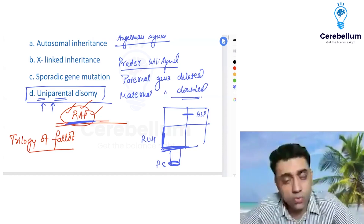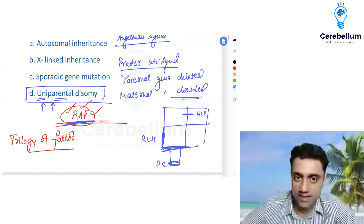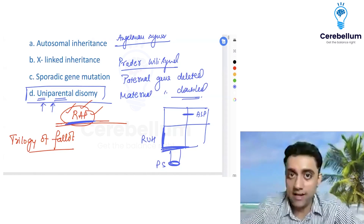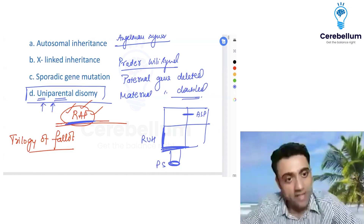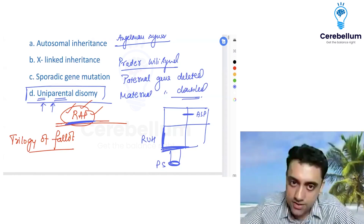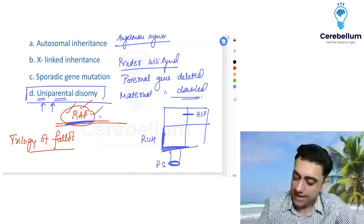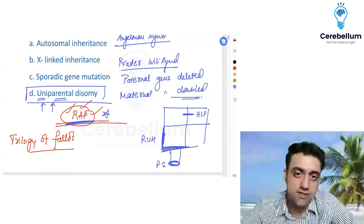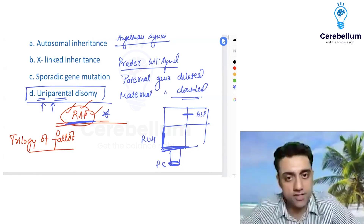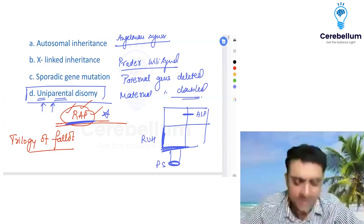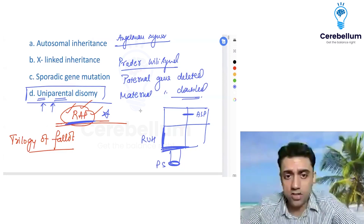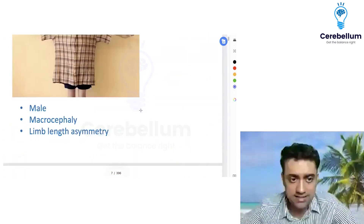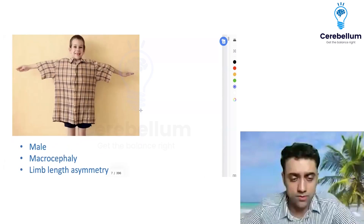So Trilogy of Fallot: the mnemonic RAP stands for right ventricular hypertrophy, atrial septal defect, and pulmonary stenosis. The examples of uniparental disomy are also remembered by RAP: Russell-Silver syndrome, Angelman syndrome, and Prader-Willi syndrome.